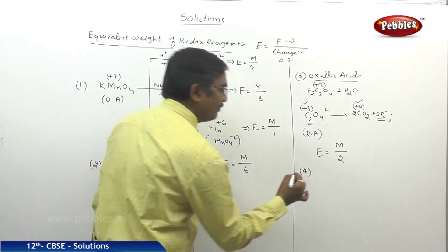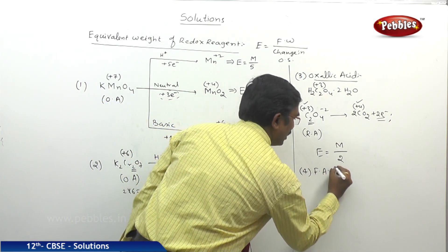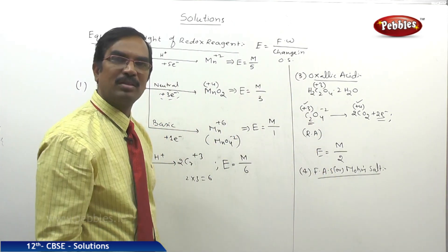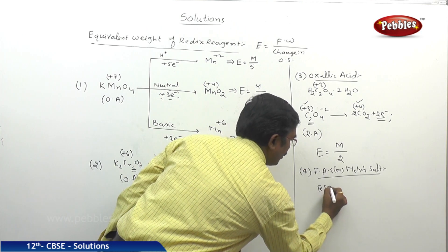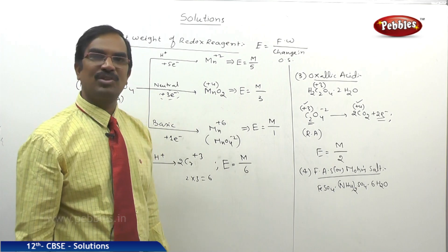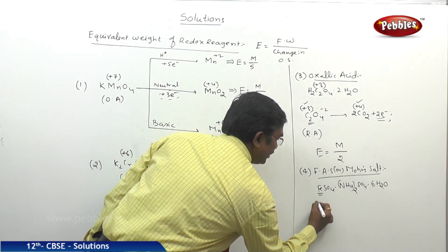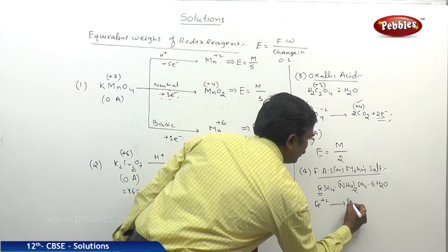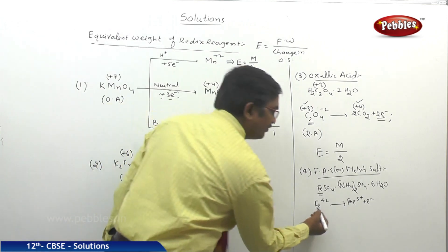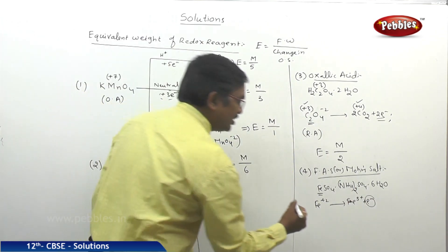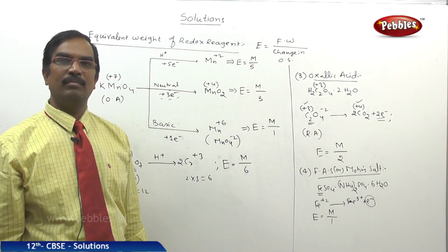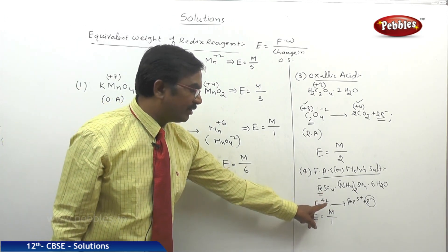Coming to Ferrous Ammonium Sulphate (FAS), also called Mohr's Salt. Here, iron is in the plus 2 oxidation state and finally changes to Fe³⁺. The iron changes from plus 2 to plus 3 — a change of 1 unit. So the equivalent weight of Mohr's Salt is its formula weight divided by 1.